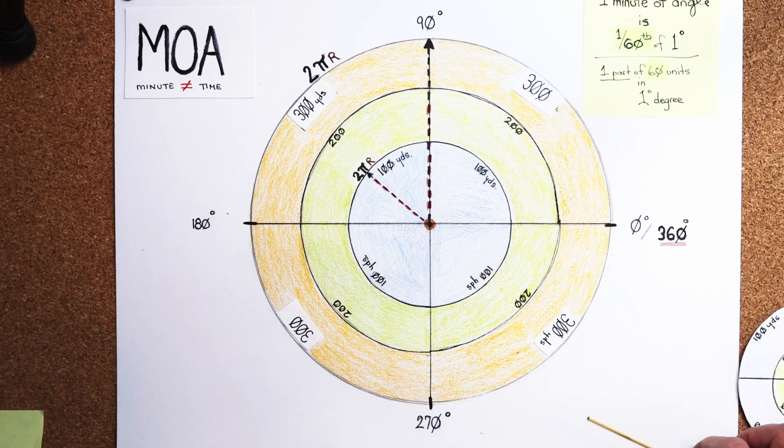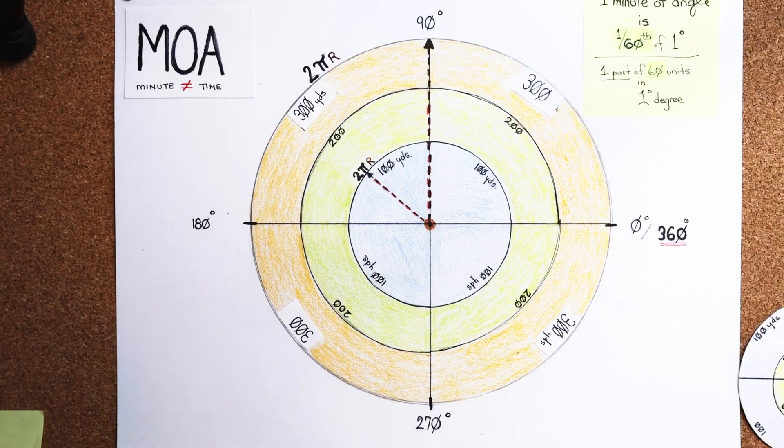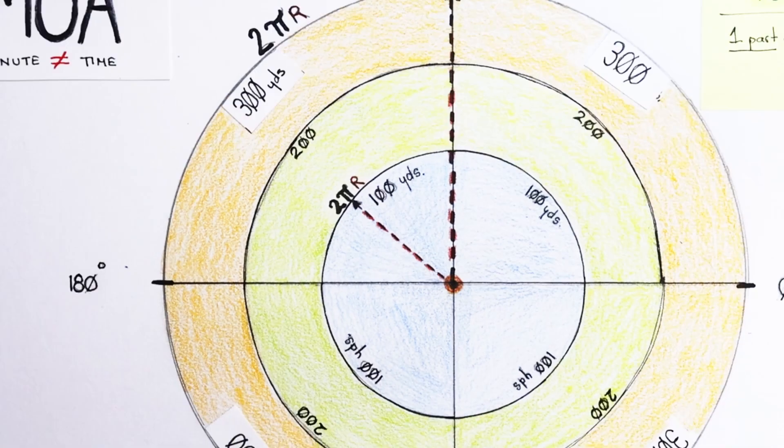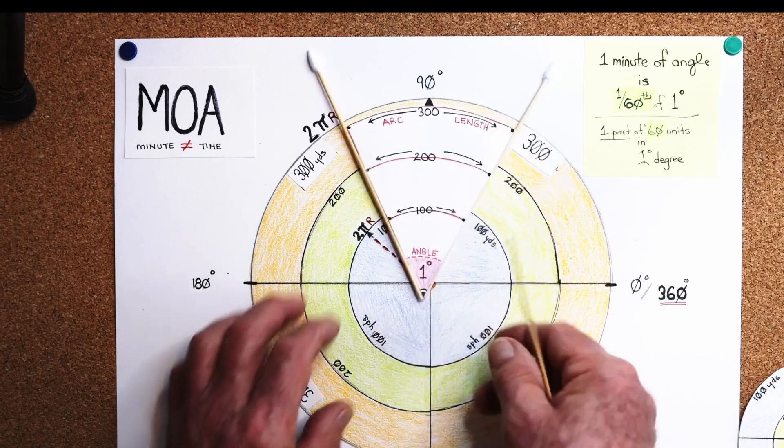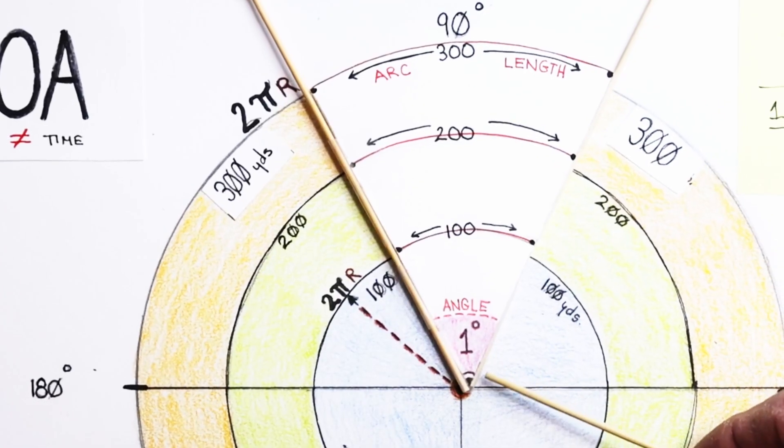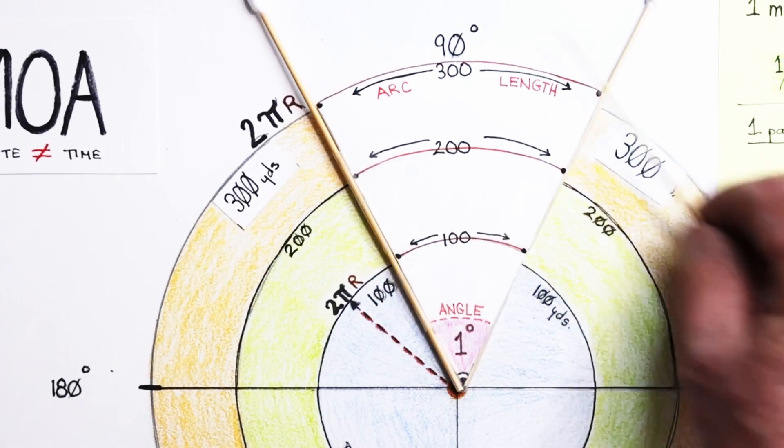So with that being said, we're going to dig down into 1 minute of angle is 1/60th of 1 degree. So what does that mean? Well, we first have to start out with 1 degree.